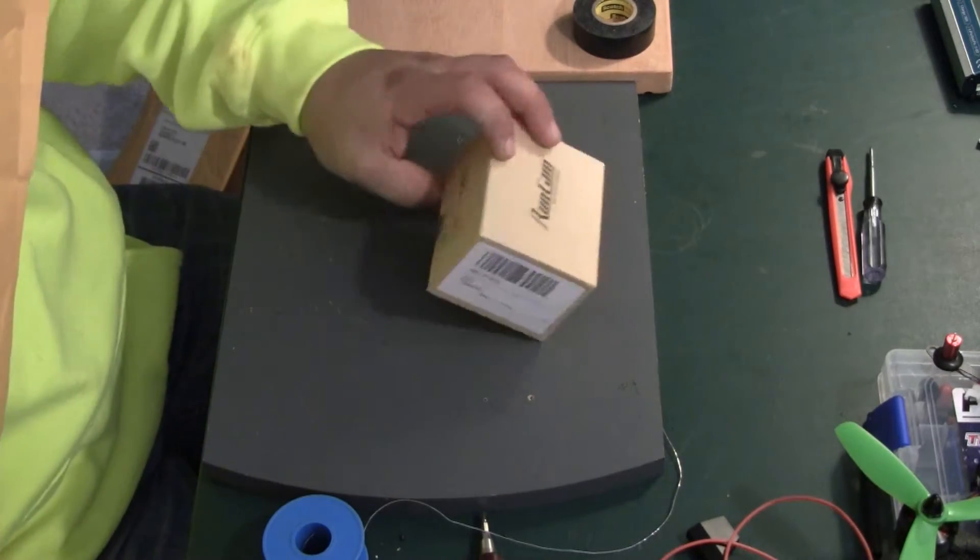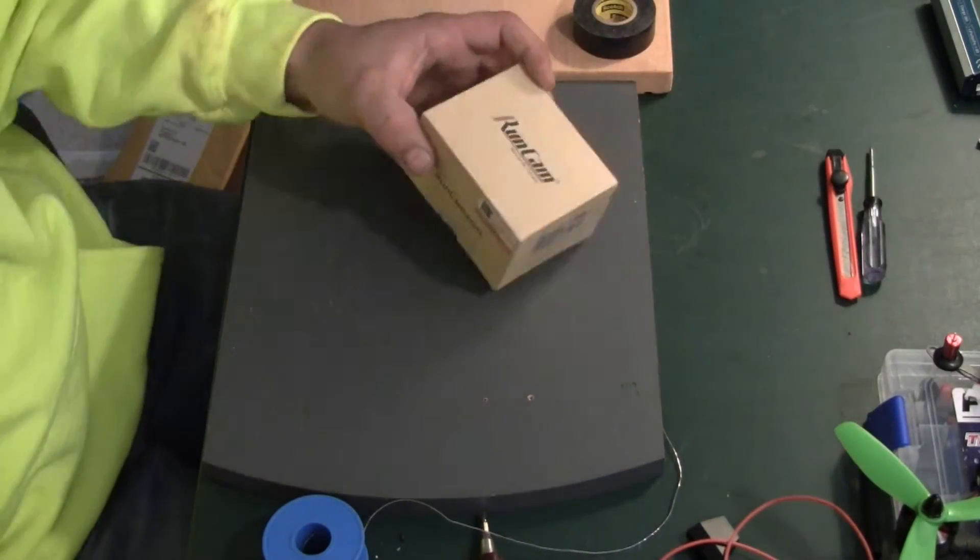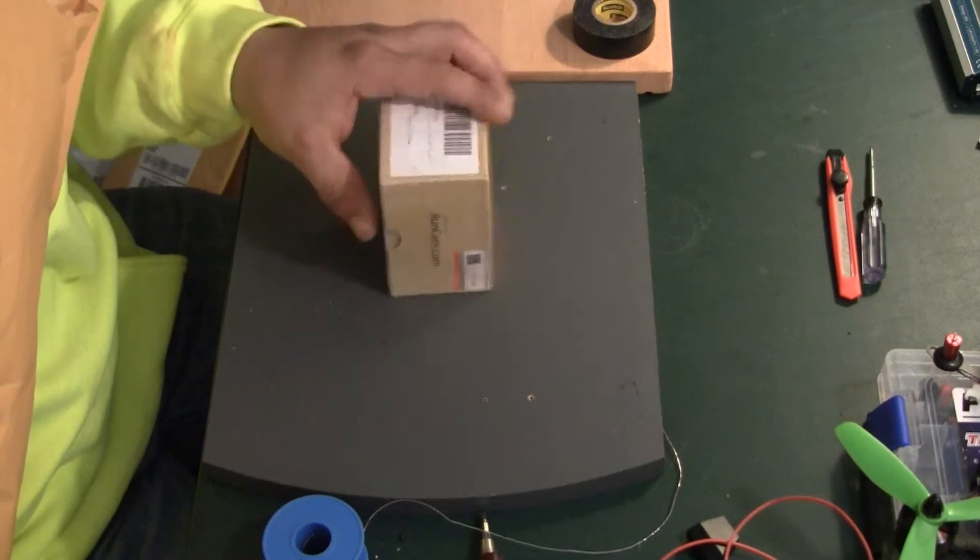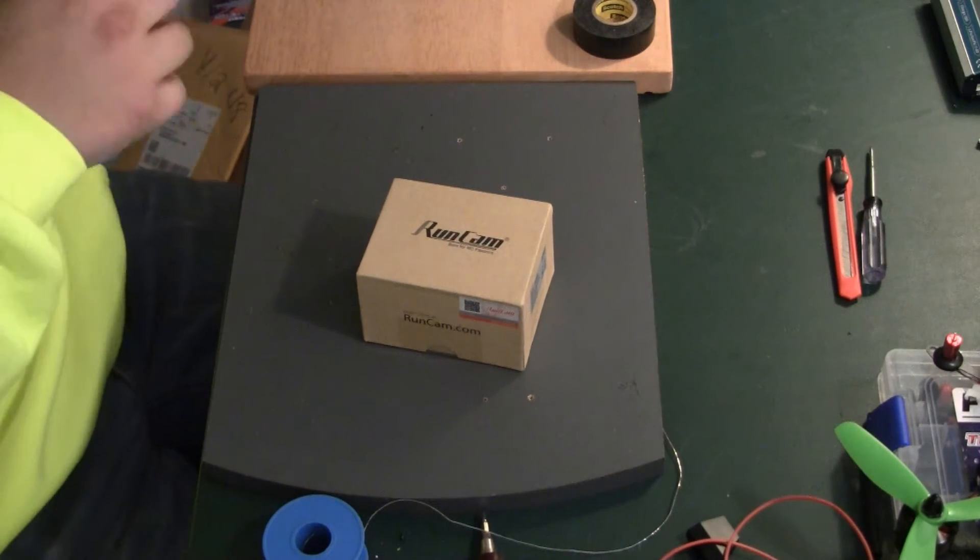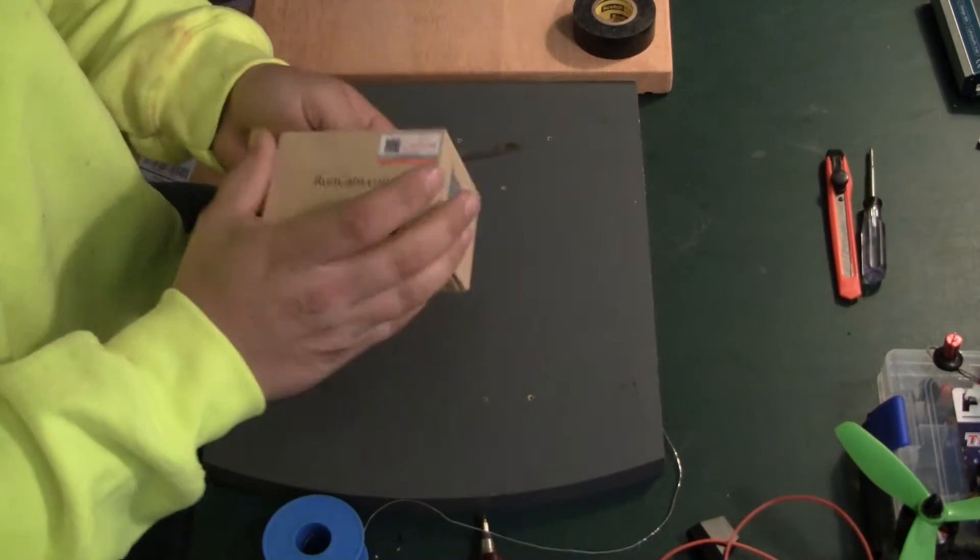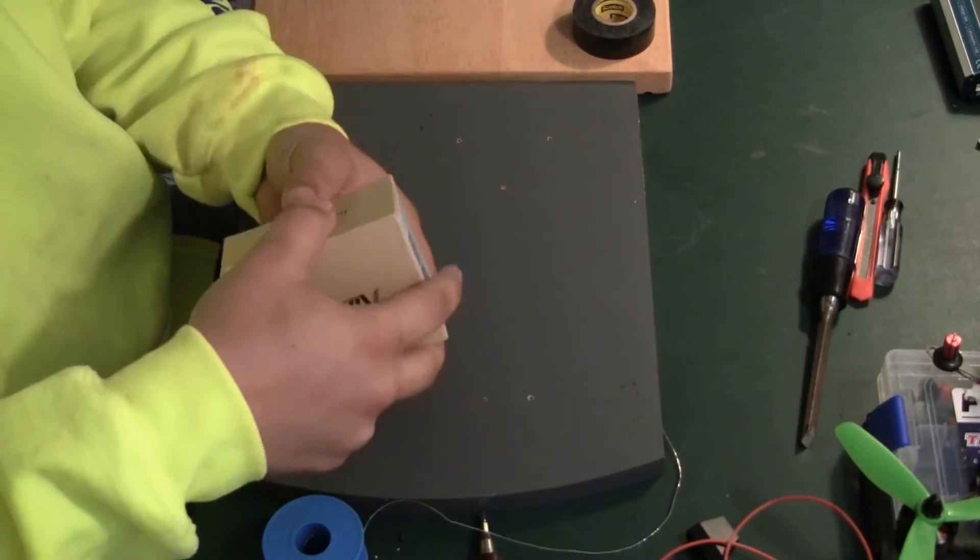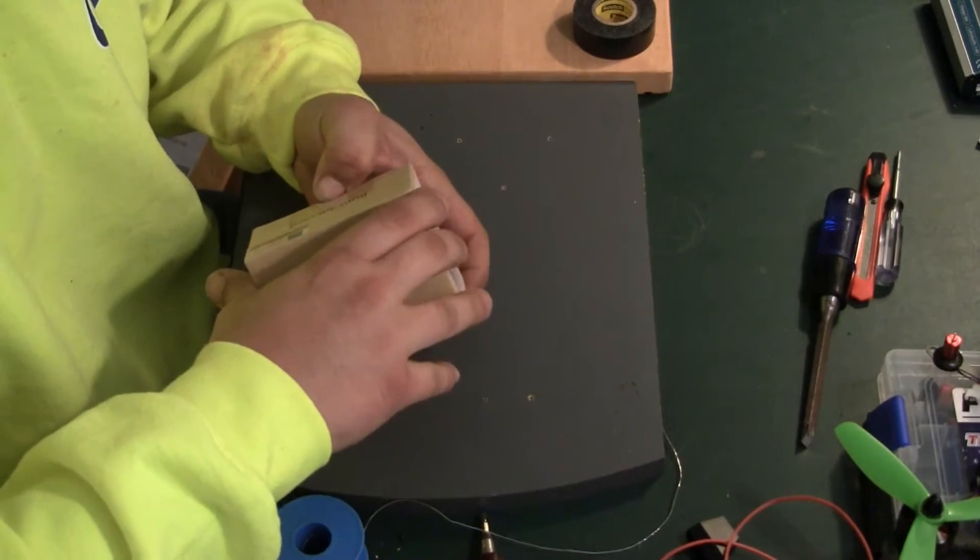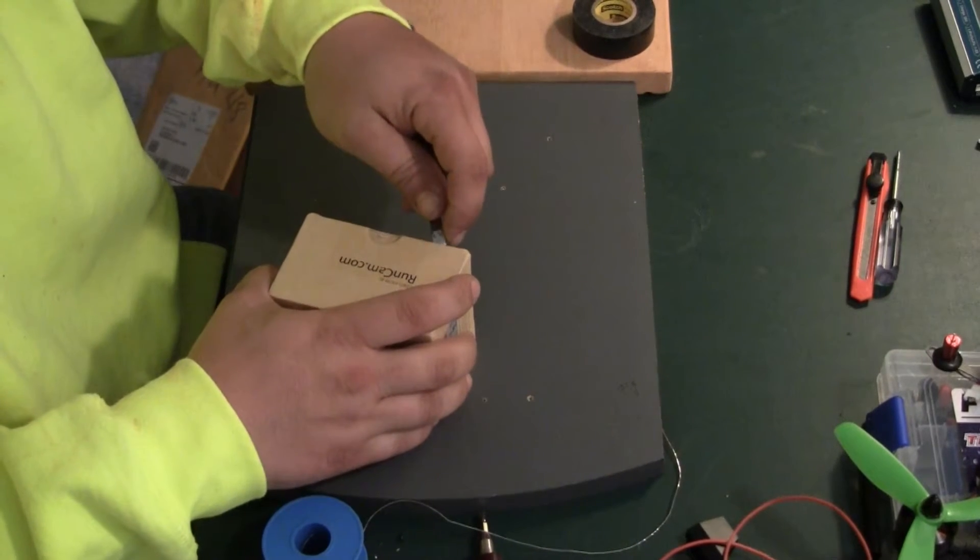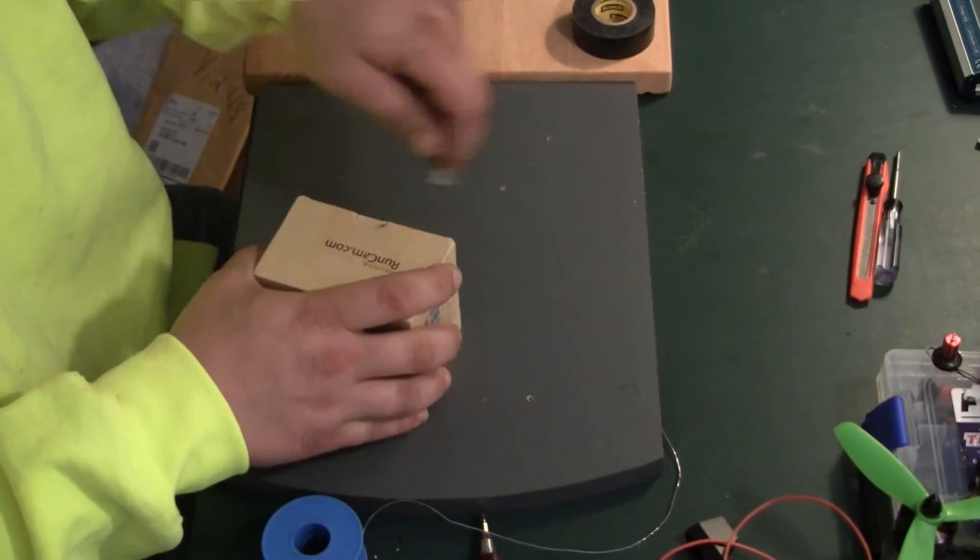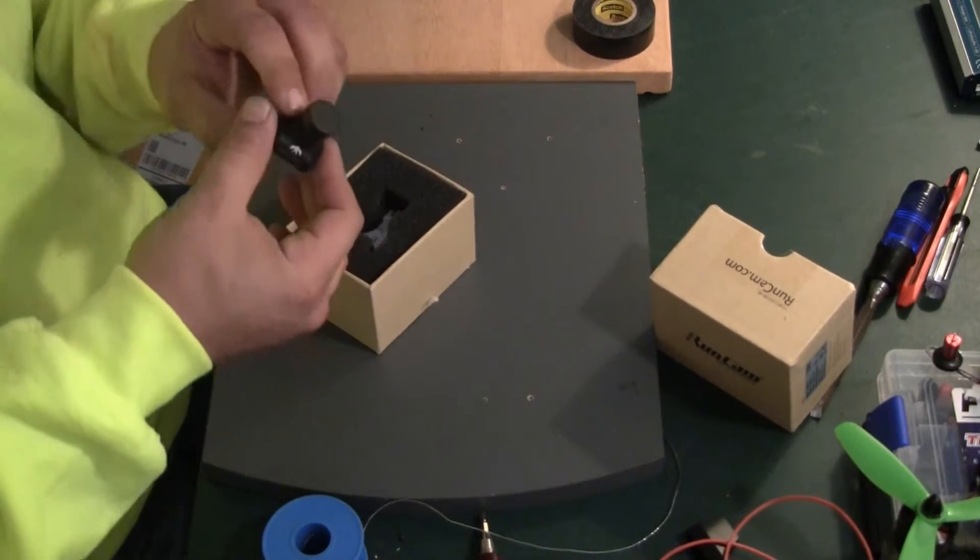Okay, what do we have here? This is a RunCam Swift with OSD. After flying for a while I realized that one of the most important things is my camera and my transmitter, which I'm still working on. If anybody has a transmitter that they have coming out that they'd like me to review, let me know because I'm definitely looking for a good transmitter VTX.